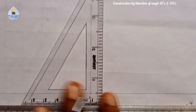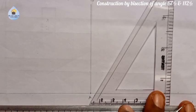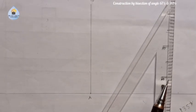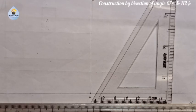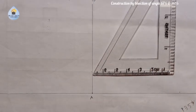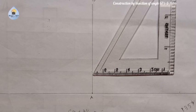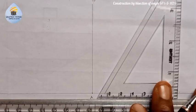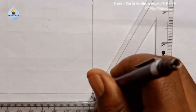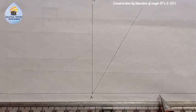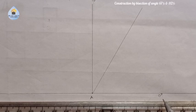When your set square is standing in this manner, the inclined axis is giving us 60°. If you look at 67.5°, it has a special angle — that special angle is 60°. So 60° plus 7.5° will give us 67.5°. What I will now do is take the set square that has 60° and draw the angle 60° this way.